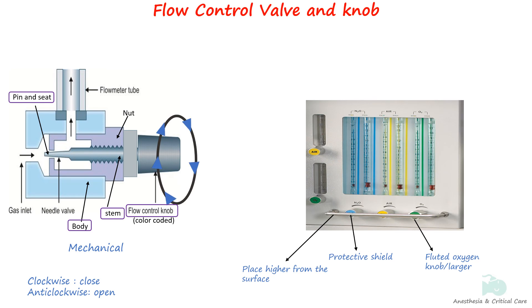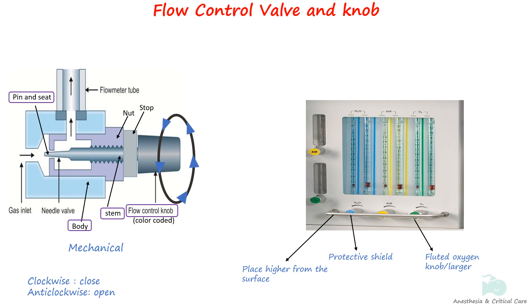The flow control knobs are turned counterclockwise to open gas flow and clockwise to close it. When the valve is closed, the pin fits into a metal seat and no gas flows. When the stem is turned counterclockwise, an opening is created between the pin and the seat, and gas starts flowing into the flow meter. There are stops for the closed position and maximum opening position, which prevent damage to the pin or disengagement of the stem from the valve body.